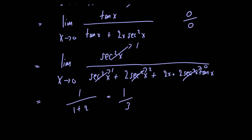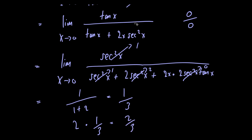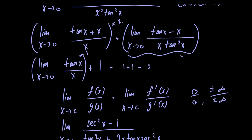The value of our first limit was 2, and we've just found that the value of our second limit is 1 over 3. So the product of these two limits gives us the final answer: 2 over 3.